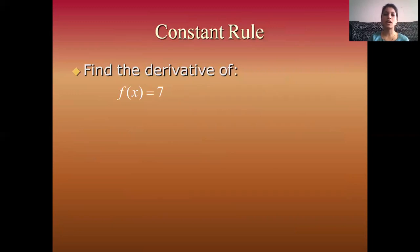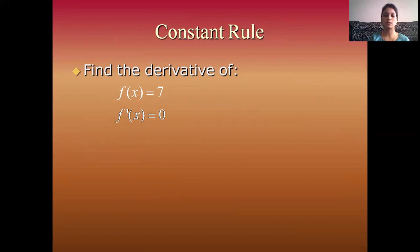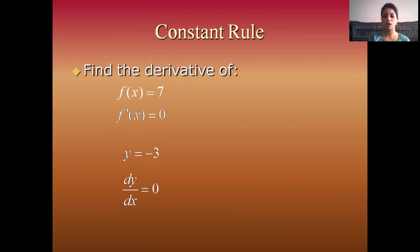Example on the constant rule. Find the derivative of f(x) = 7. Apply derivative on both sides. Derivative of f(x) is f'(x), and 7 is a constant, so f'(x) = 0. Second example: y = −3. Apply derivative on both sides. dy/dx equals the derivative of −3 with respect to x, which is 0 because −3 is a constant. Another notation for dy/dx is y', so y' = 0 also.